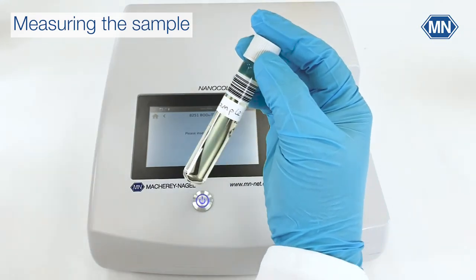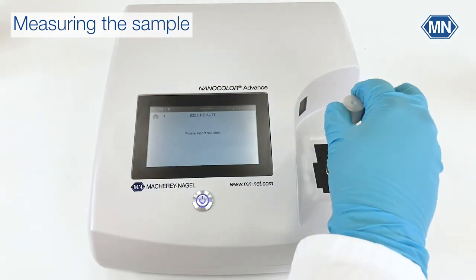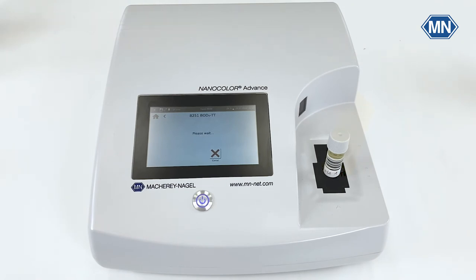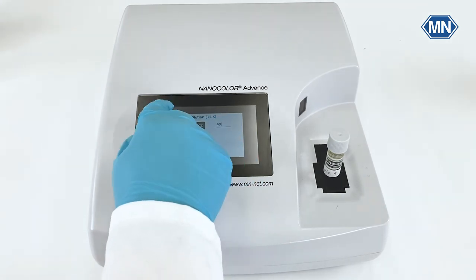Take your sample tube and clear it from the outside. Put it in the photometer and press measure. Enter the dilution factor and the device will show the BOD5 of your sample.